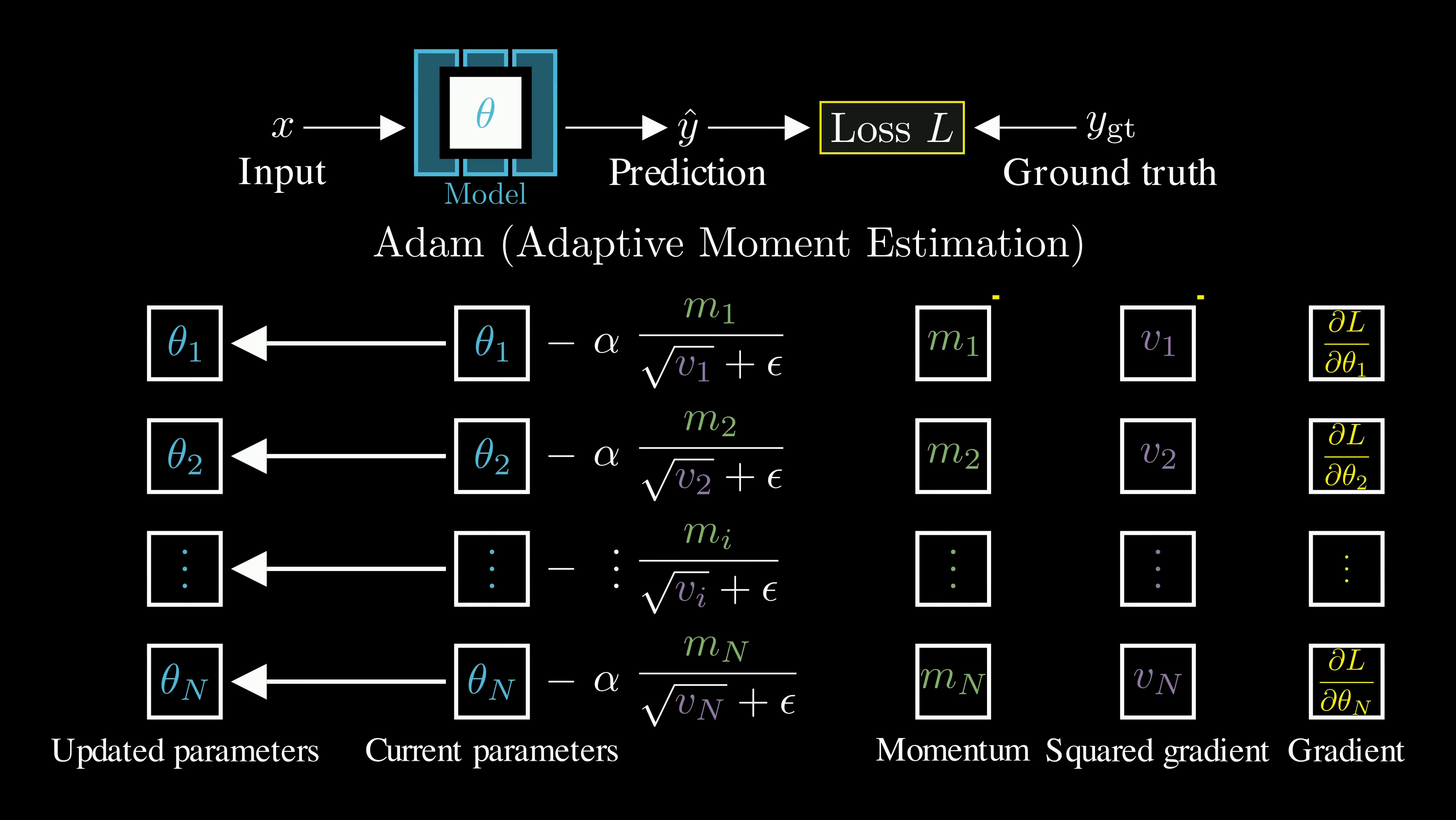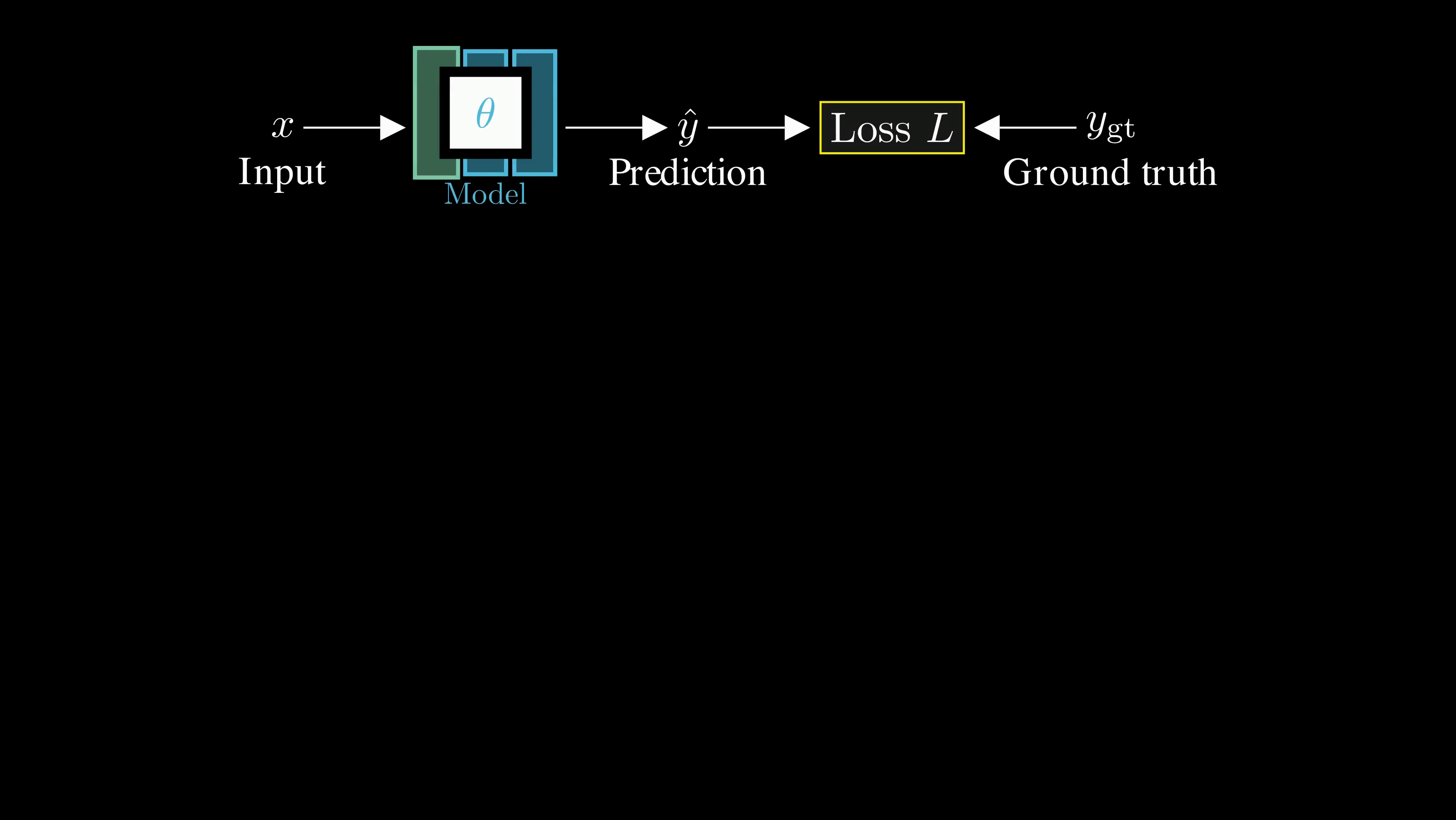But there's a catch. Adam requires keeping two extra variables for every model parameter. As a result, the optimizer state takes up about twice as much memory as the model itself. Furthermore, Adam treats all the parameters as a single long vector, updating each value independently without considering any internal structure. This approach is called a vector-based optimizer. But can we explicitly account for the underlying matrix structure of the model parameters?